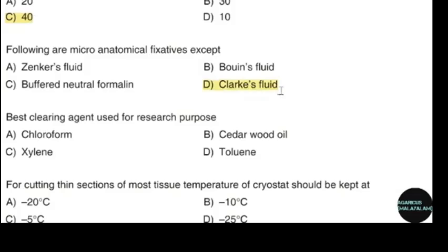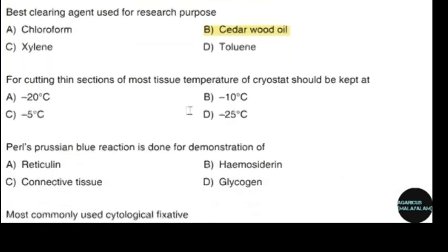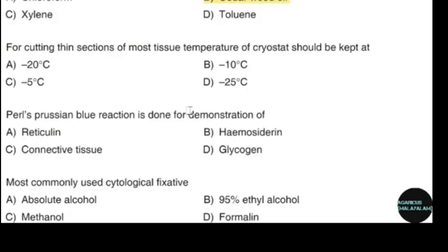Best clearing agent used for research purposes. Correct answer: option D — Cedar wood oil. For cutting thin sections of most tissue, the temperature of the cryostat should be kept at. Correct answer: option A — Negative 20 degrees Celsius.